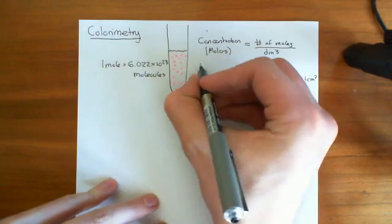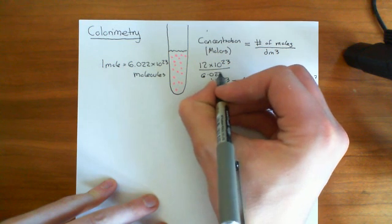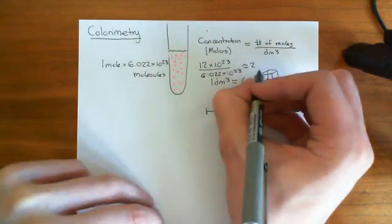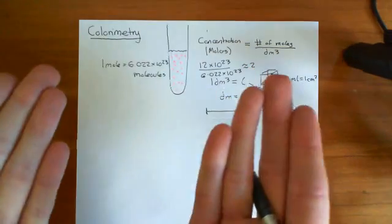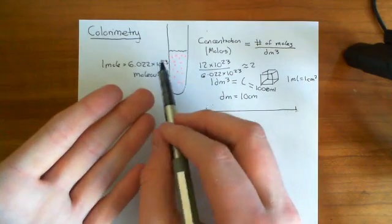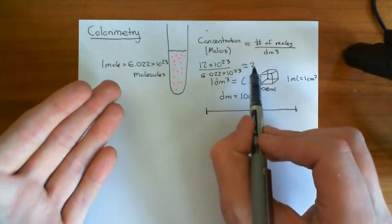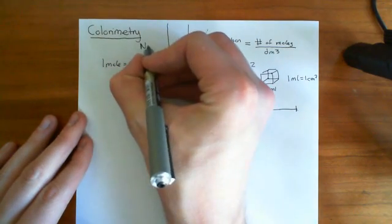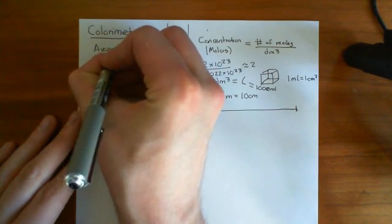So concentration says: if we had a decimetre cubed of this fluid, how many moles would be in there? Say you have 12 times 10 to the 23 molecules — if you divide by 6 times 10 to the 23, you get approximately 2. Moles is basically just a more convenient measure of number of molecules. This number is known as Avogadro's constant, abbreviated NA.